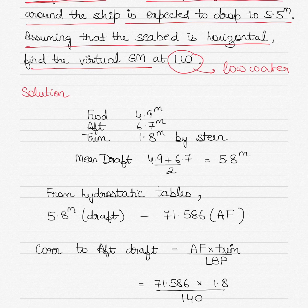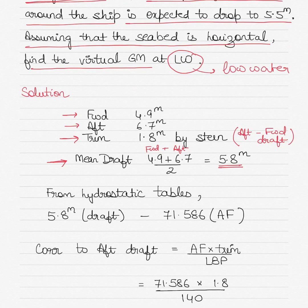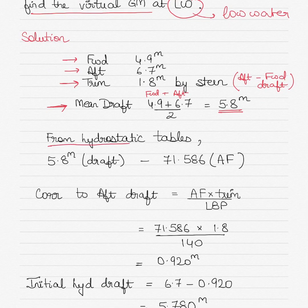The first thing to do is use the forward and aft drafts to calculate the trim. Trim is aft draft minus forward draft: 6.7 minus 4.9 gives 1.8 meters by the stern. Then calculate the mean draft — forward draft plus aft draft divided by 2 — so 4.9 plus 6.7 gives a mean draft of 5.8 meters.